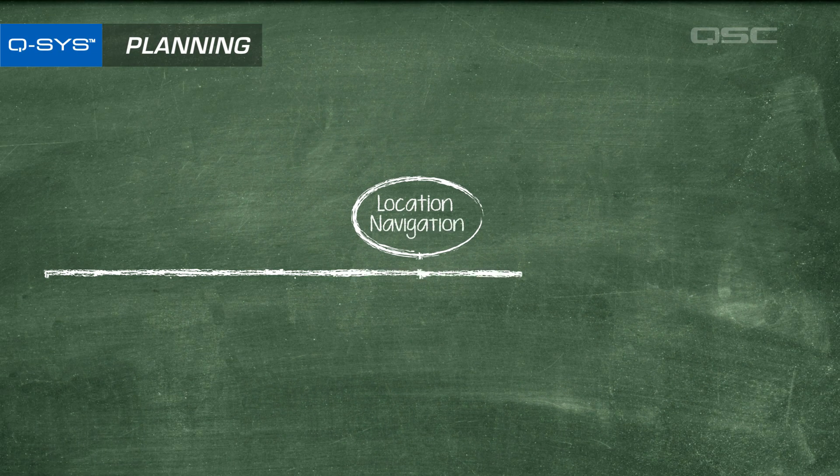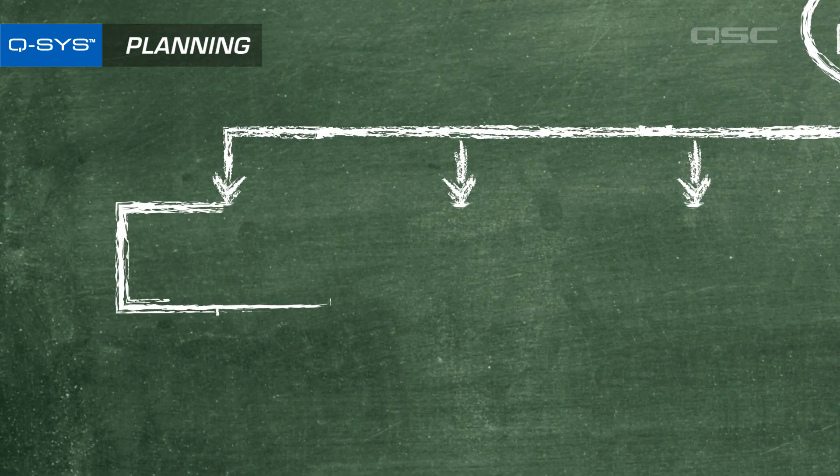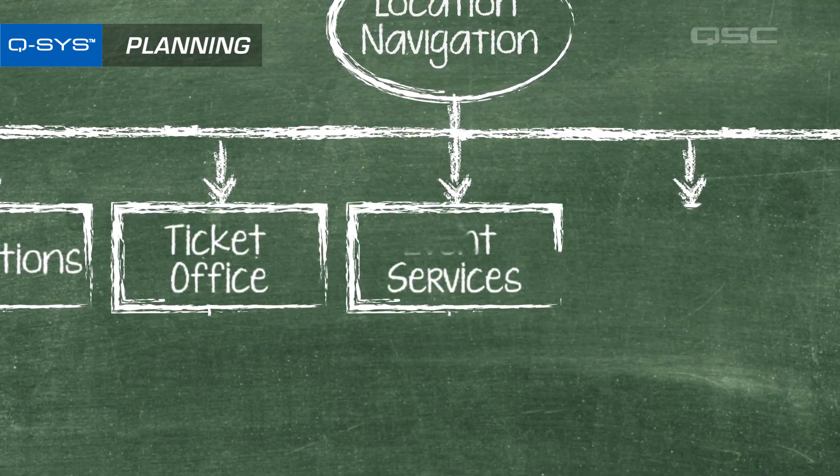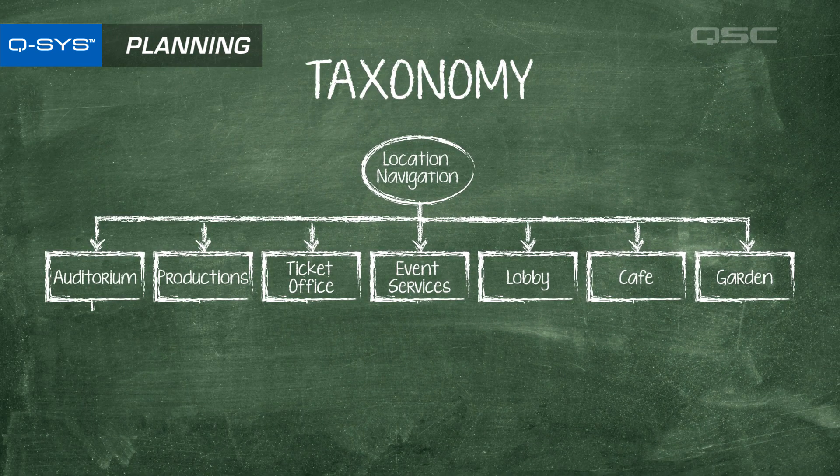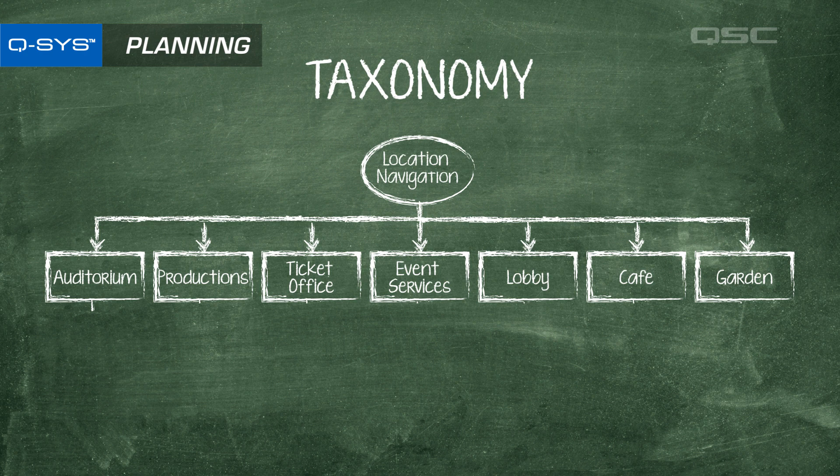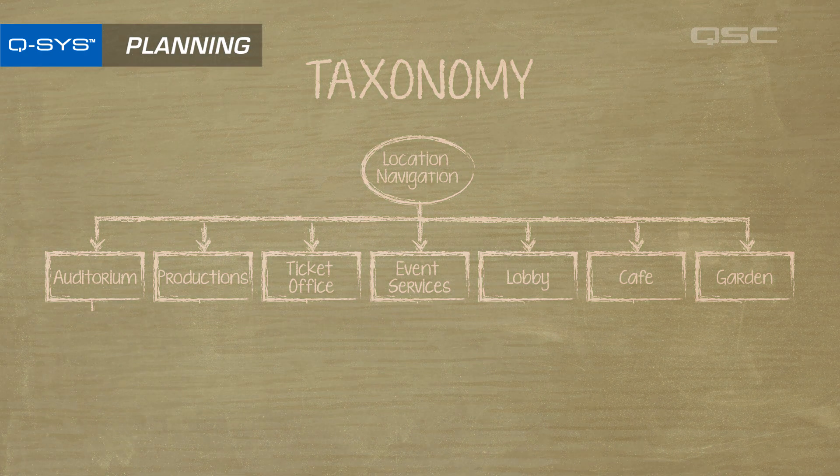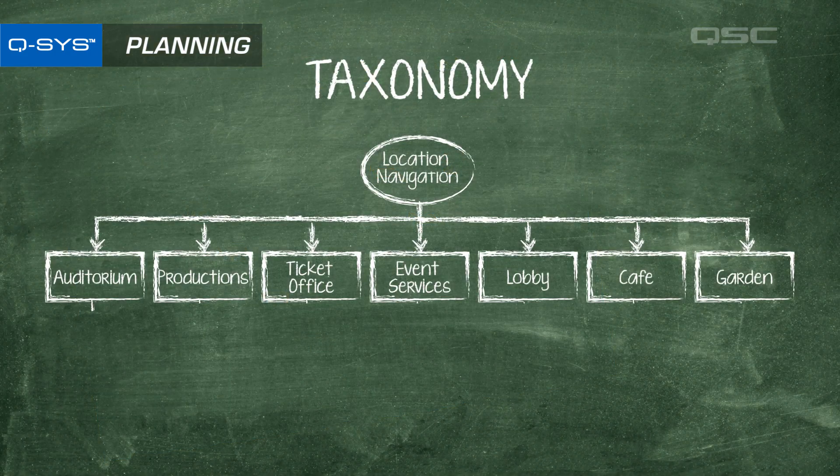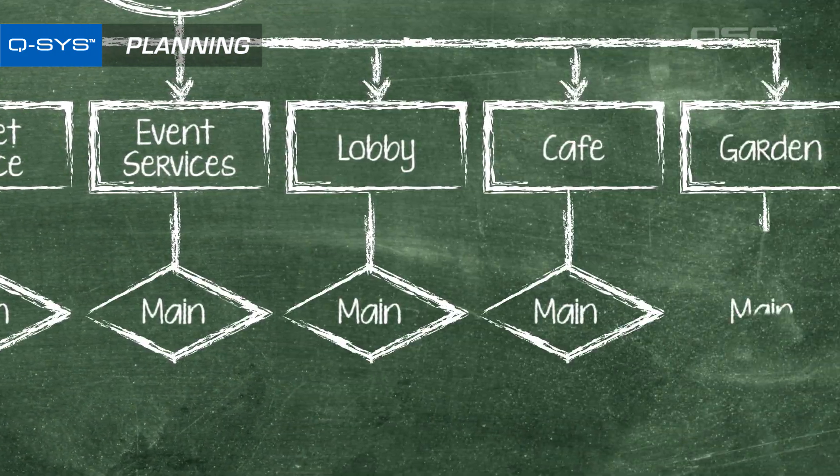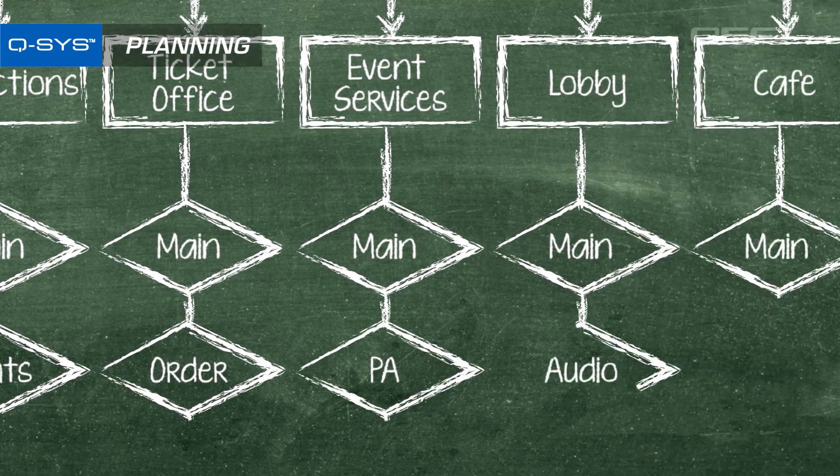You may want to start by drawing a flow chart to guide you through all of the possible functions of the system. This is called the taxonomy of the system, a chart that will help you to group related concepts together under logical categories. Taxonomy is a term you may recognize from taxonomy charts of plants and animals that separate them into kingdoms, genuses, phylum, all that other stuff from school you've forgotten about. Structure out your UCI the same way before you start building it. How many different pages or layers do you need for each task? And what makes sense for your venue?